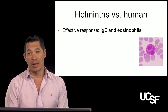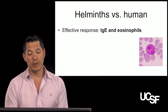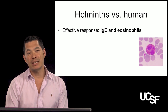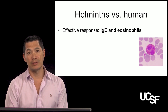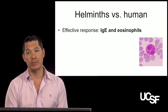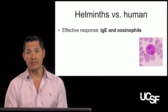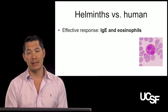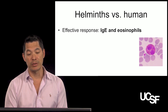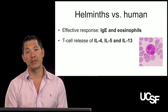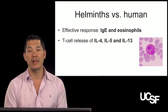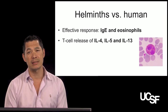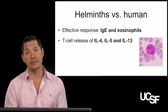What is the immunologic response to helminths when we get infected? IgE guides the eosinophils to attack the helminths. The eosinophils release toxins contained in their granules. There is also T cell release of IL-4, IL-5, and IL-13. This inflammatory response is really what causes a lot of the disease and symptoms when we get infected with these parasites.